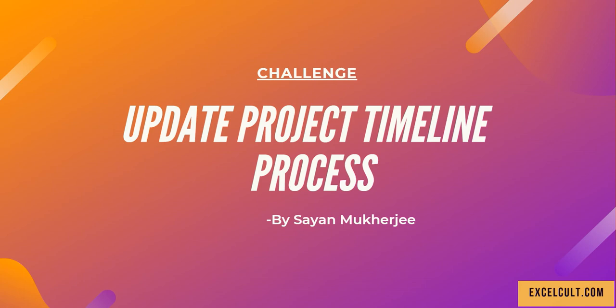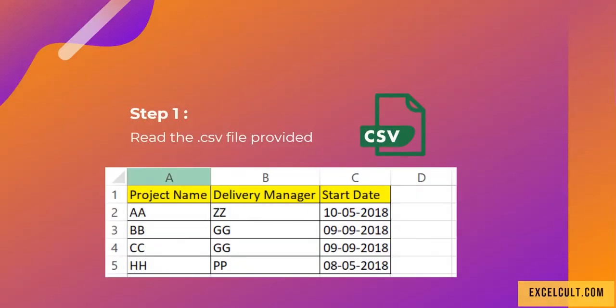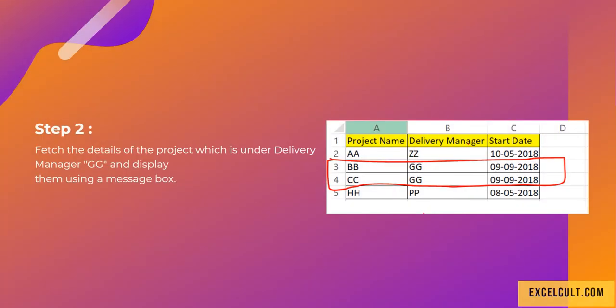Here's the challenge: Update Project Timeline Process. As step one, you should be able to read the CSV file, which looks exactly like this, with three columns: project name, delivery manager, and start date. You can just put some random data into it.